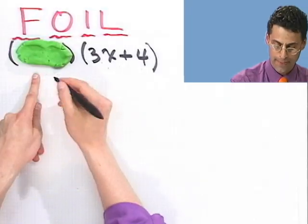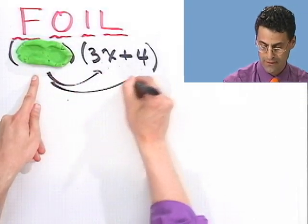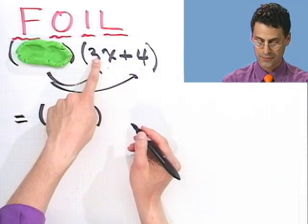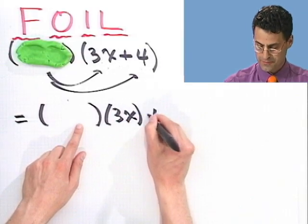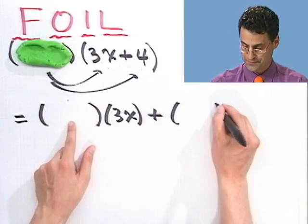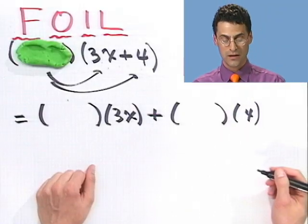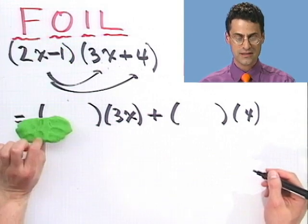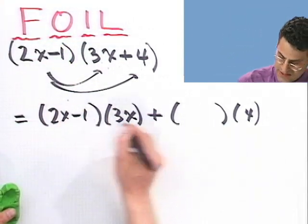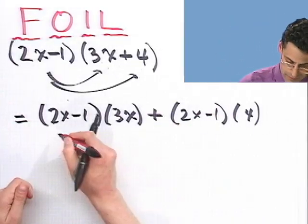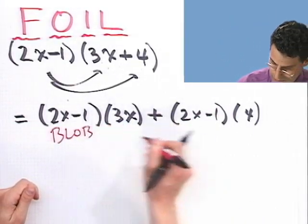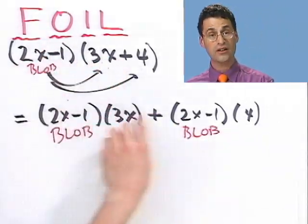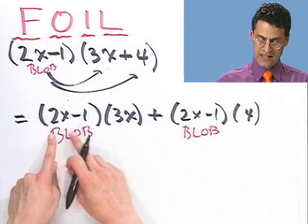Okay, we'll use that later. Okay. Now, if I distribute the blob, what do I see? Well, I see the blob times the 3x plus the blob times the 4. Okay, but what was the blob? Well, let me remind you what the blob was. There it is. So I better write that in. 2x - 1. That's the blob. Okay. You see how I just distributed that across?